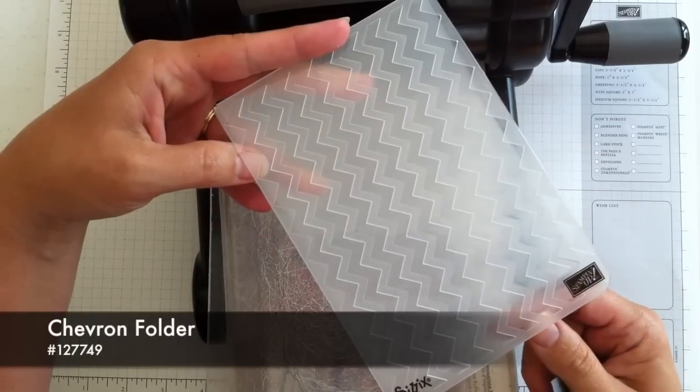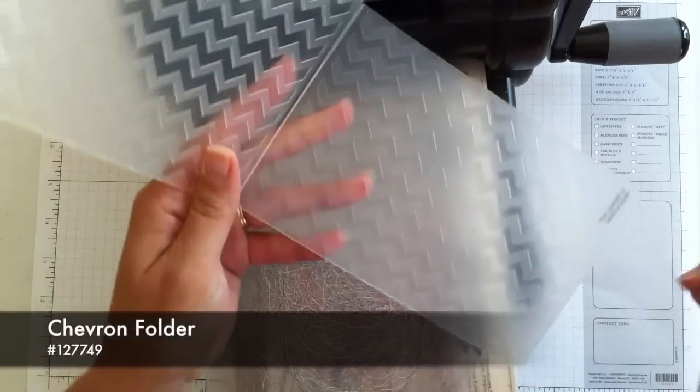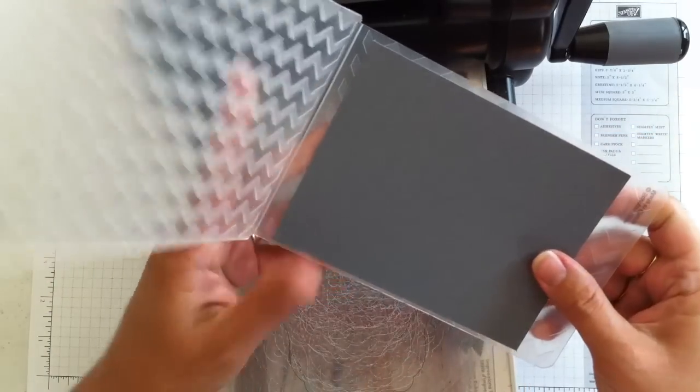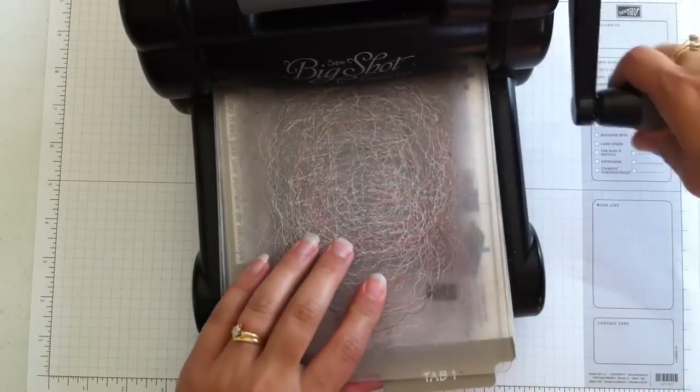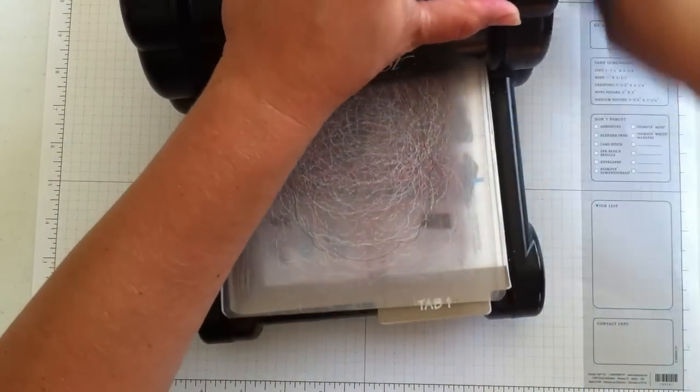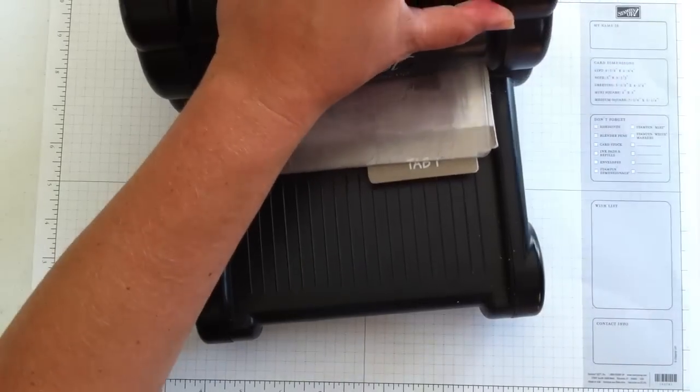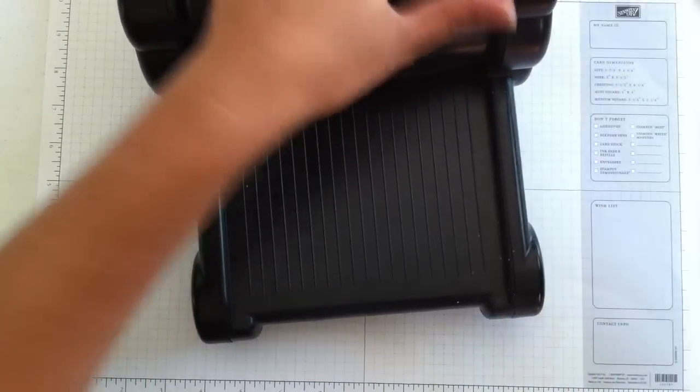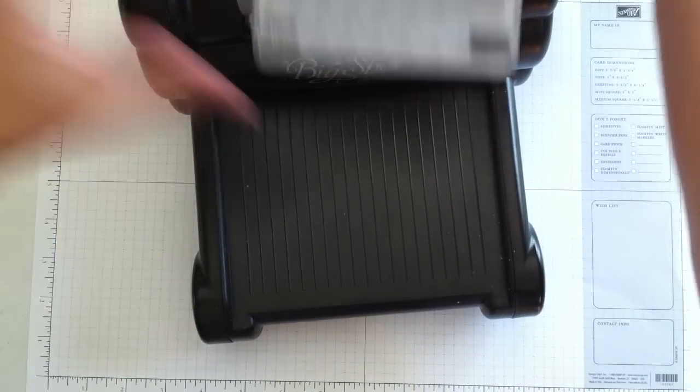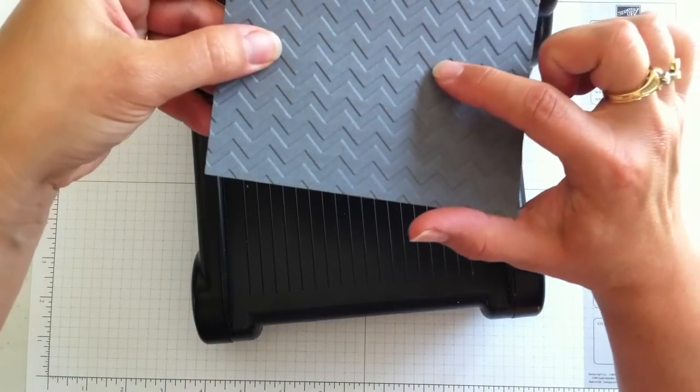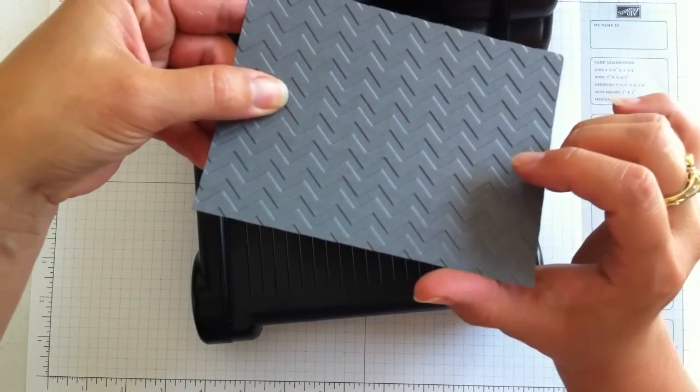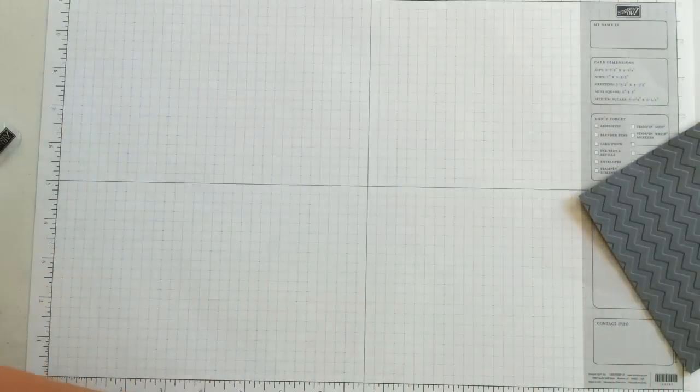This is one of our new embossing folders called Chevron. And I'm going to use the basic gray cardstock right inside there. And you'll see after I crank it through, the awesome texture that it puts on this cardstock and just the deep grooves that it creates. So I'll pull it out here. And you can see there's just really a lot of depth in those zigzags. Okay, let me set this aside.